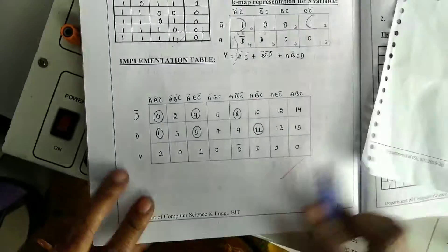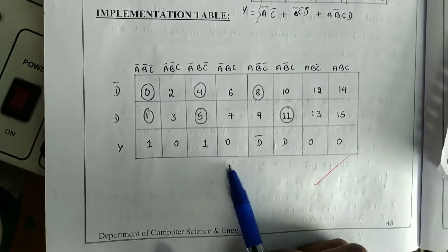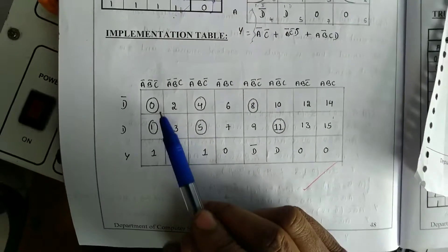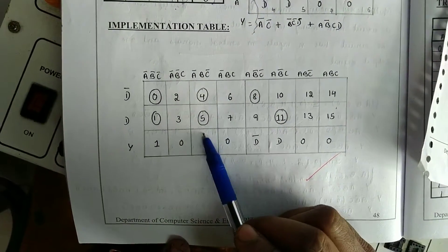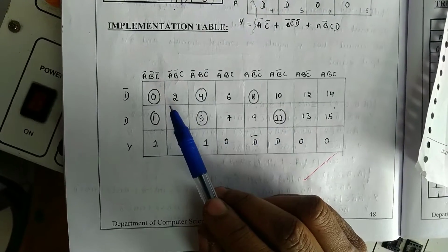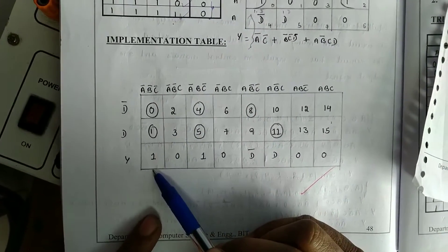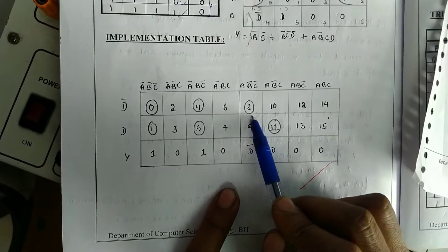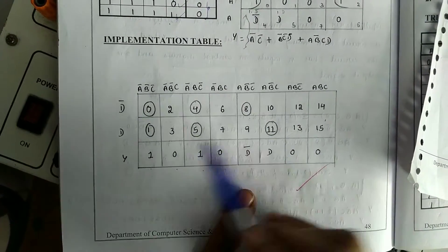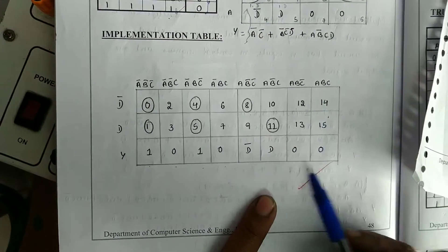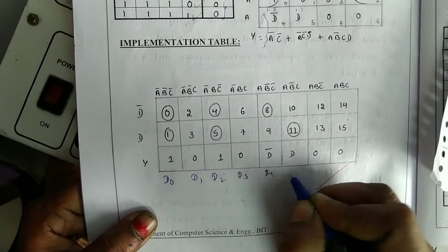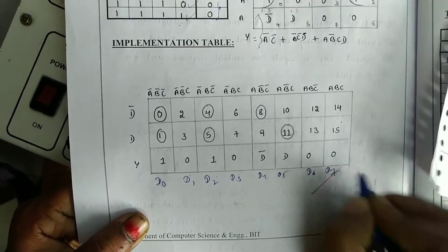The third method is the implementation table. Write the implementation table with rows and columns, put the minterm values in the table, and circle the values given in the question: 0, 1, 4, 5, 8, 11. Where both rows are circled, output is 1. Where neither is circled, output is 0. Where only the d-row is circled, it is d-bar. Where only the other row is circled, it is d. This gives input lines d0 through d7 for the 8-to-1 multiplexer.